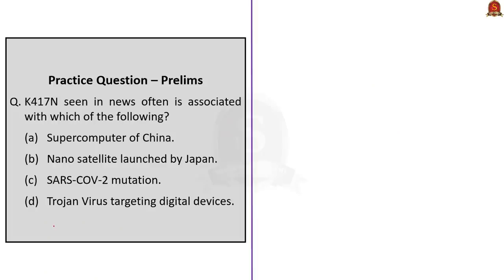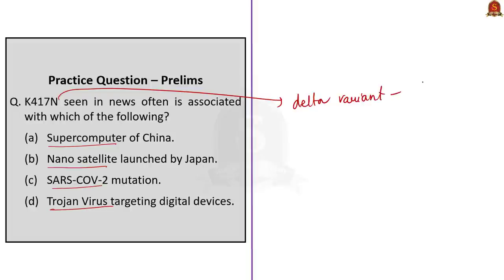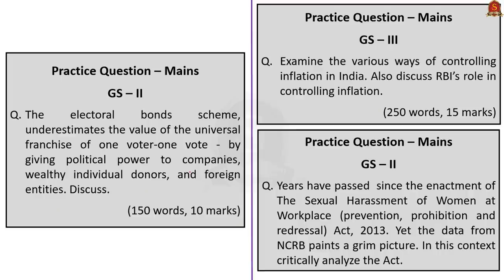Fourth question: K417N seen in news is associated with which of the following? Option A: Supercomputer of China. Option B: Nano Satellite launched by Japan. Option C: SARS-CoV-2 Mutation. Option D: Trojan Virus targeting digital services. From our earlier discussion on the delta variant, we saw that K417N is the mutation related to the AY.1 variant, and this mutation has shown resistance to the monoclonal antibody treatment drug cocktail casirivimab and imdevimab. Hence, K417N is associated with SARS-CoV-2 mutation. The answer is Option C. These are the practice questions — aspirants may write and post their answers in the comment section for peer review.